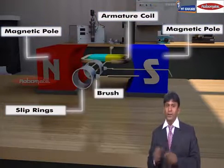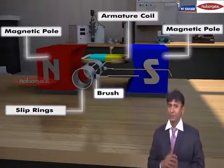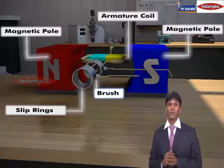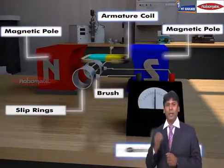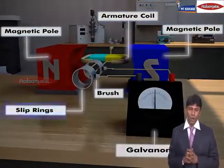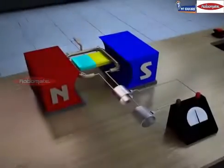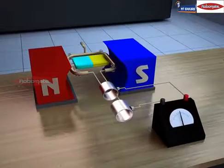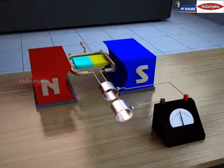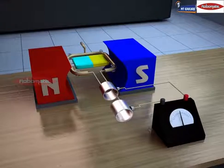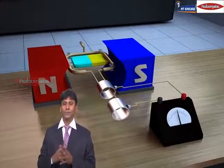Here are the brushes. This is a brush and after this brush is the galvanometer. We know galvanometer is a device which measures the direction of current.